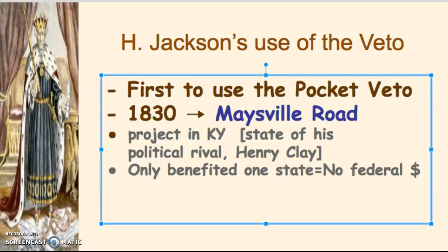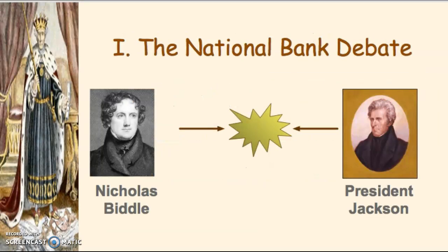One of the biggest issues in Jackson's administration is the National Bank. Henry Clay helped push through the charter of the Second National Bank. Nicholas Biddle became president of the bank in 1823. Jackson was not a proponent of the National Bank — his view was that it was unconstitutional, not in the best interest of all Americans. Keep in mind that McCulloch v. Maryland under John Marshall's court had declared it constitutional, so Jackson was going against that ruling.